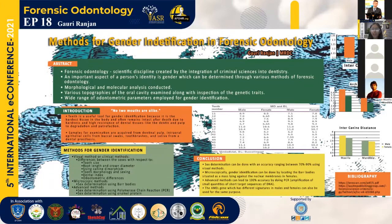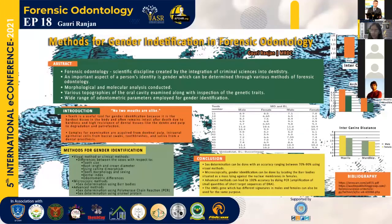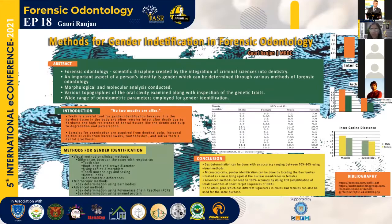When talking about the accuracy of visual methods, a precision of 80% is recorded when using measurements of root length and crown diameters, whereas canine dimorphism accounts for a success rate of 74%. However, the highest success rate of 89% is observed when dental index is used. Methods that can give a success rate of 100% fall under the advanced category. In conclusion, the methods for gender identification in forensic odontology can be excellently used in cases wherein only skeletal fragments of the body are available. Thank you.